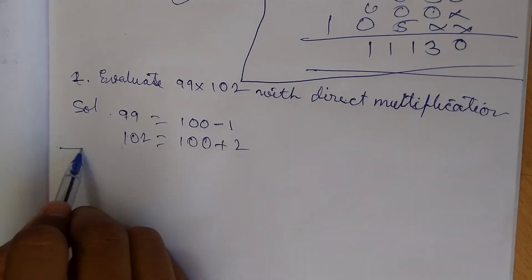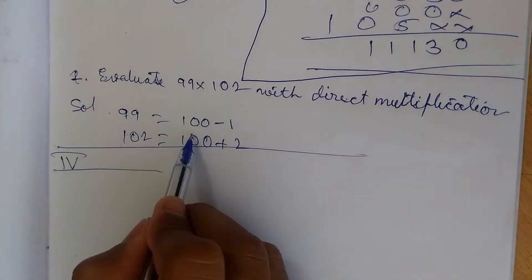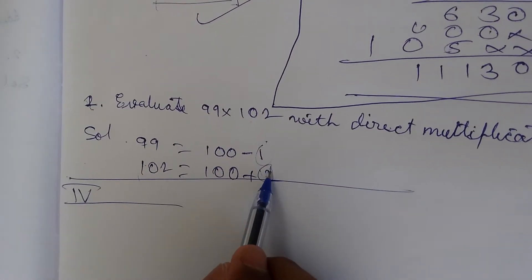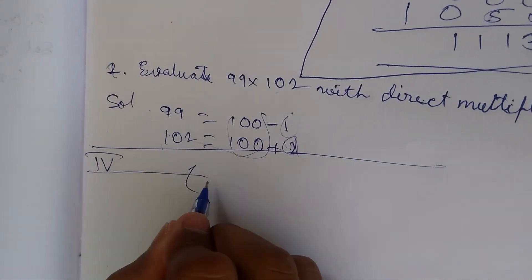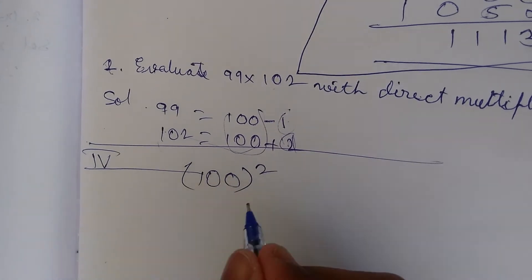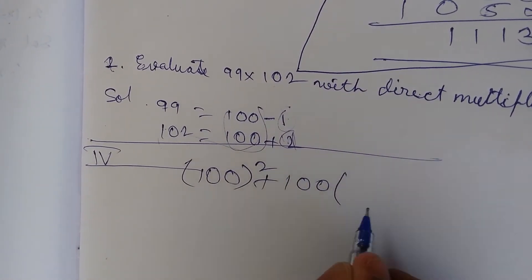Now I am using again the fourth identity. We can use it as x is there, and this is a and these both are different. So again I am taking that identity: (100 + (-1))(100 + 2).